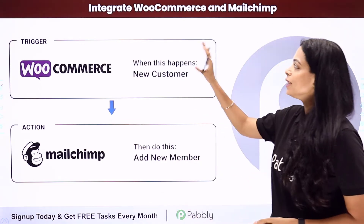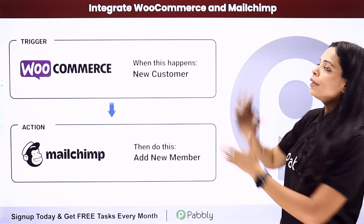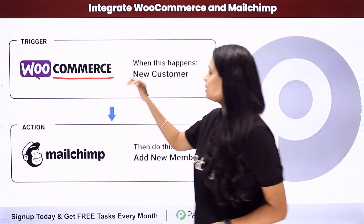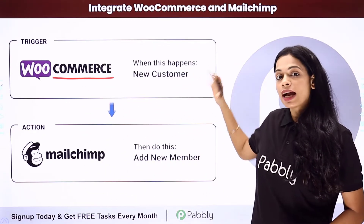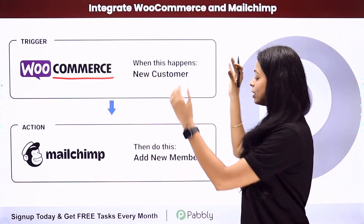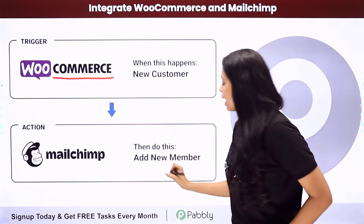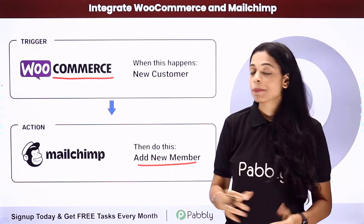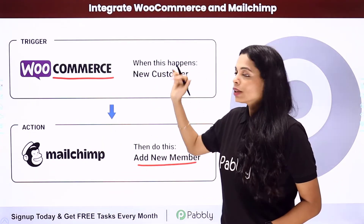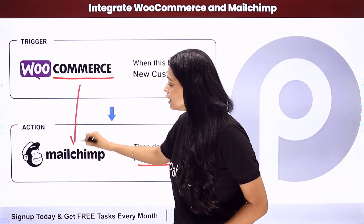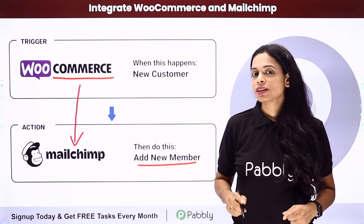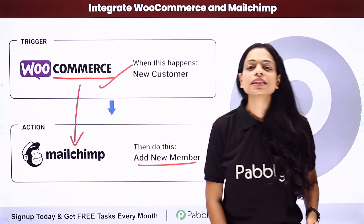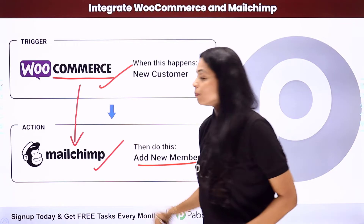In this video we are going to see how to integrate WooCommerce and MailChimp. Every time a new customer is added on WooCommerce, the same customer should be added as a new member on MailChimp, which is an email marketing software. This integration can be done using Pably Connect, where the trigger application is WooCommerce and the action application is MailChimp.